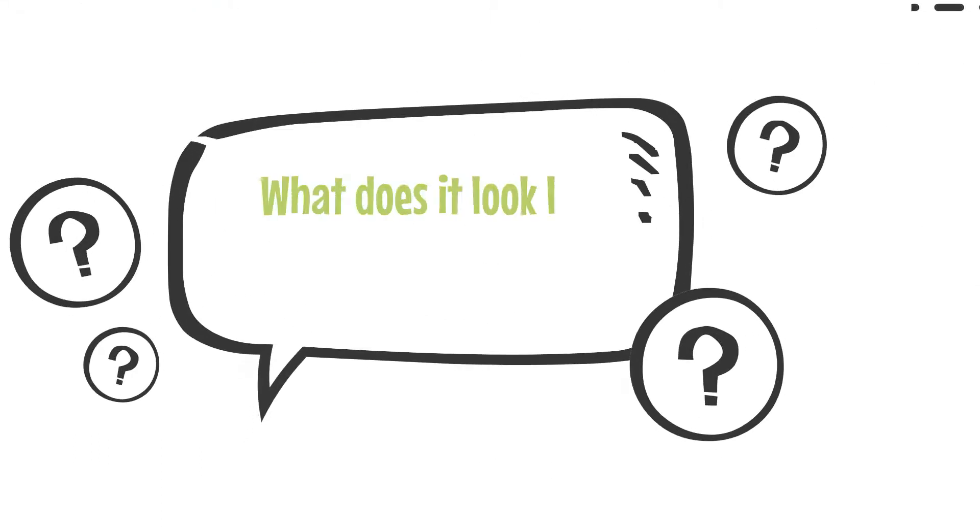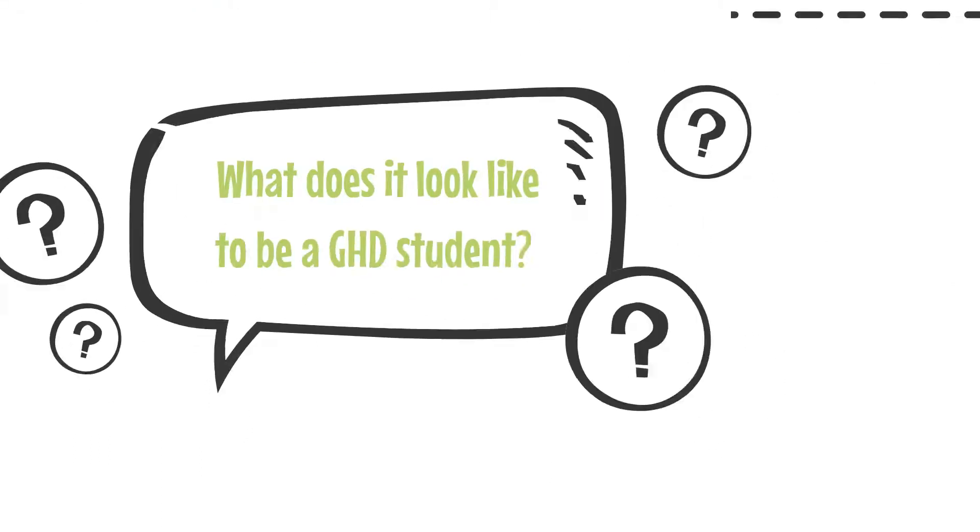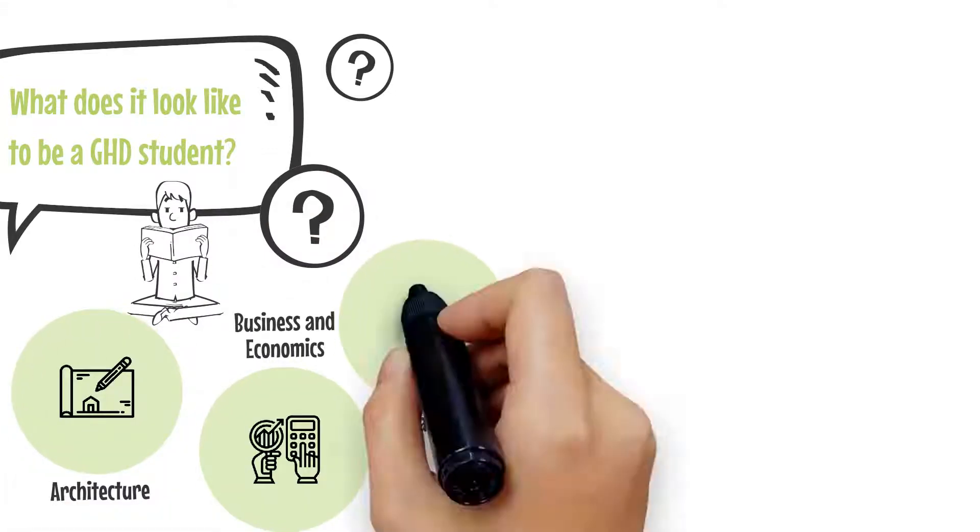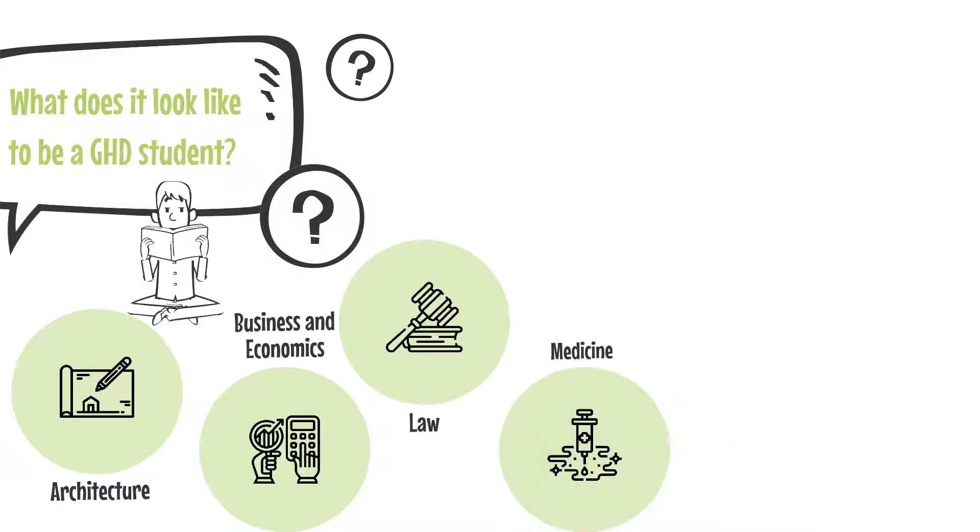What does it look like to be a GHD student? Our curriculum is comprised of courses from architecture, business and economics, law, medicine, science and social science.